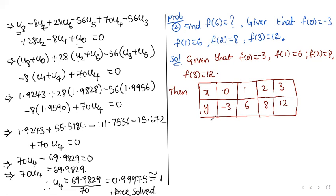Now what we have to find: x0, x1, x2, x3 are the arguments and y0, y1, y2, y3 are the entries. The x-values are the arguments and the y-values are the entries in the forward difference table.